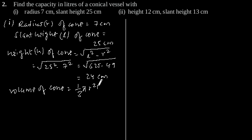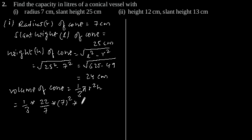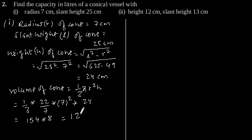Volume of cone is 1/3 × π × r² × h. Putting the values, we get 1/3 × 22/7 × 7² × 24, which equals 154 × 8, giving volume of cone as 1232 cubic centimeters.